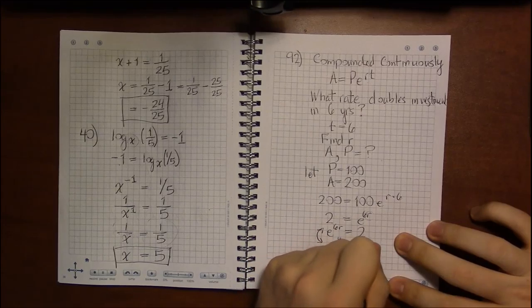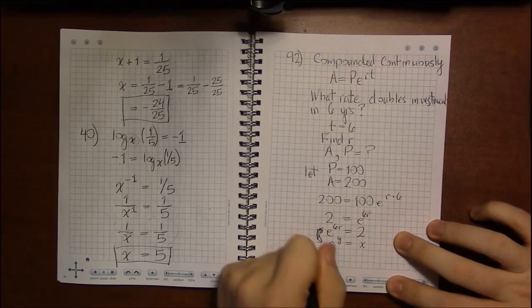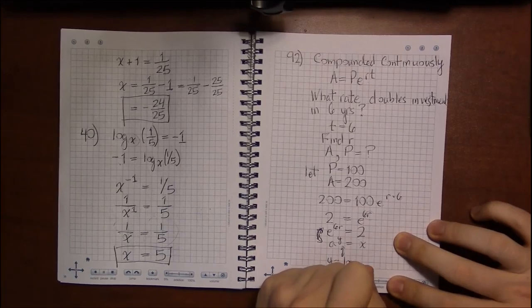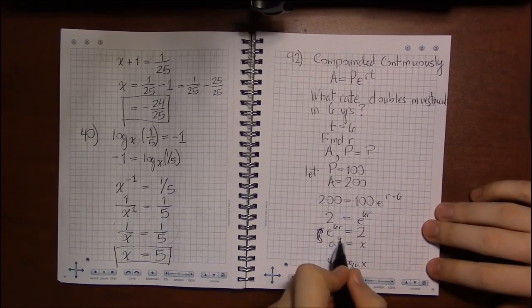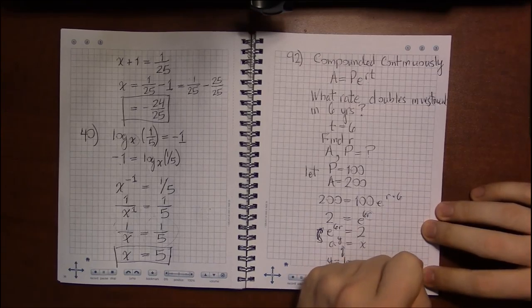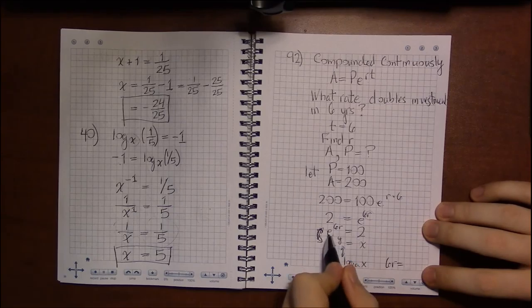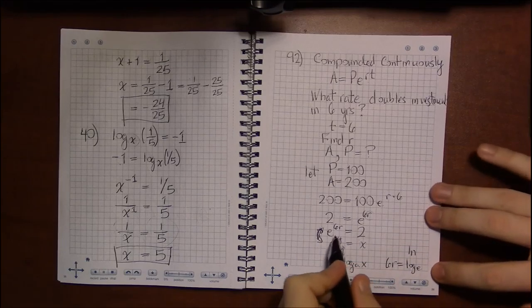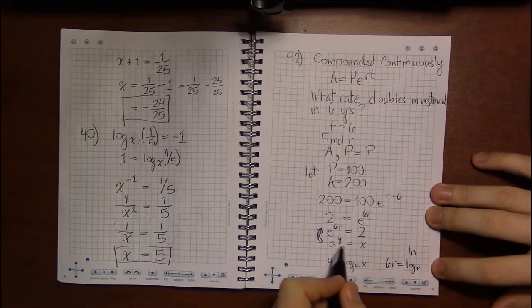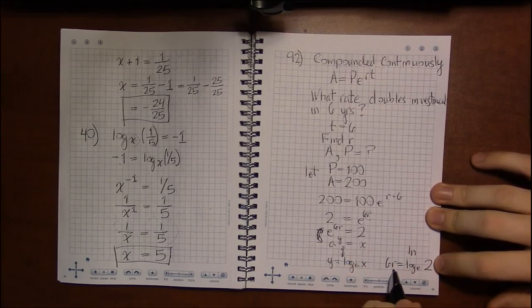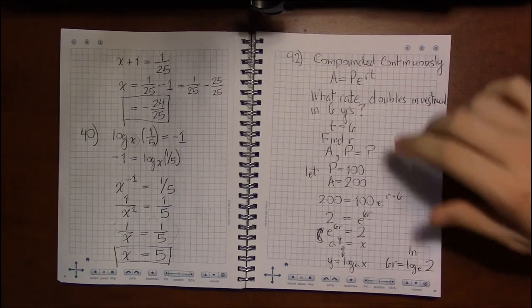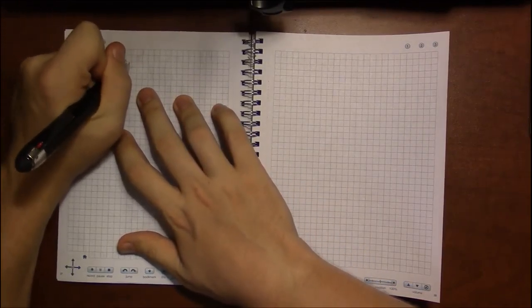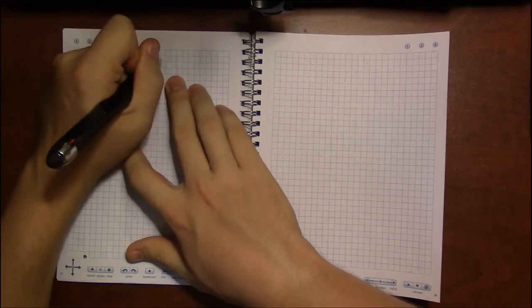So this is our A to the Y equals X. So this becomes, this switches into Y equals log base A of X. So in our case, Y is 6R. A is E. So this is log base E or LN for natural log. And X, what's X? X is 2. So we have 6R equals log base E of 2. And I'll rewrite that as natural log. 6R equals LN of 2.